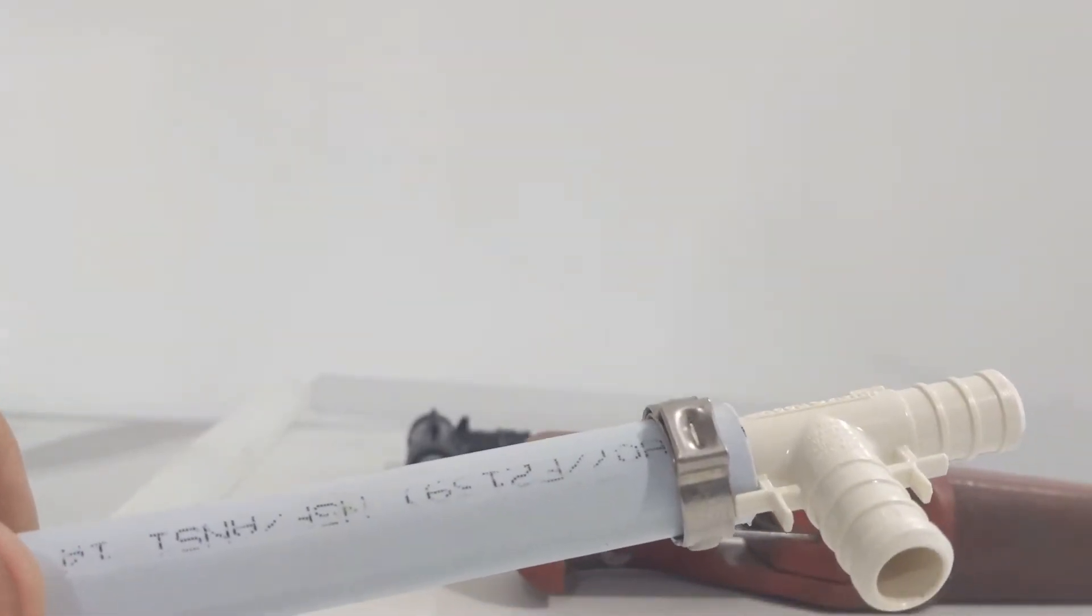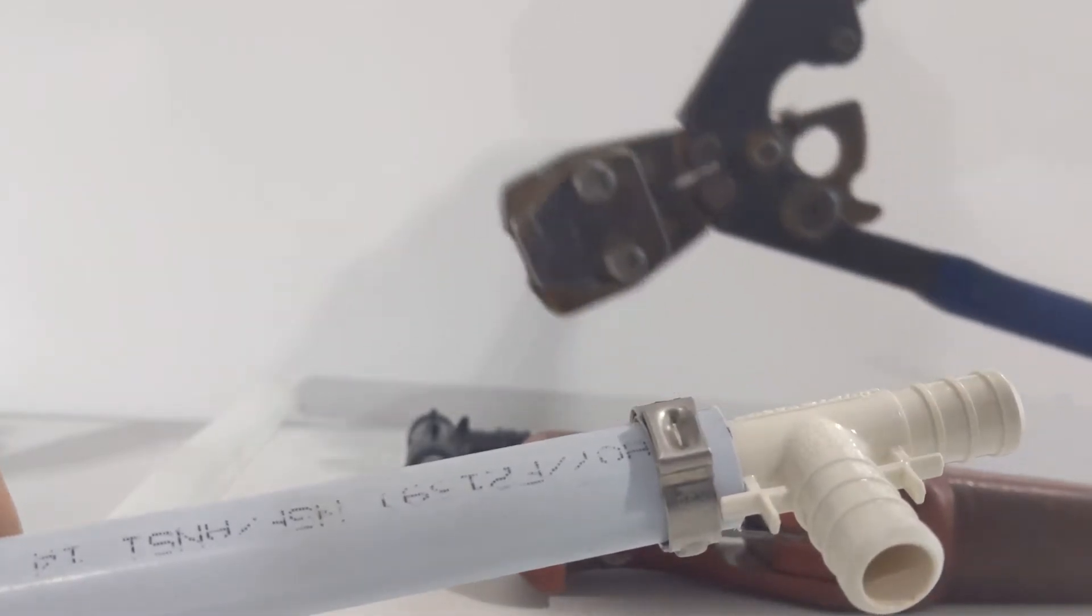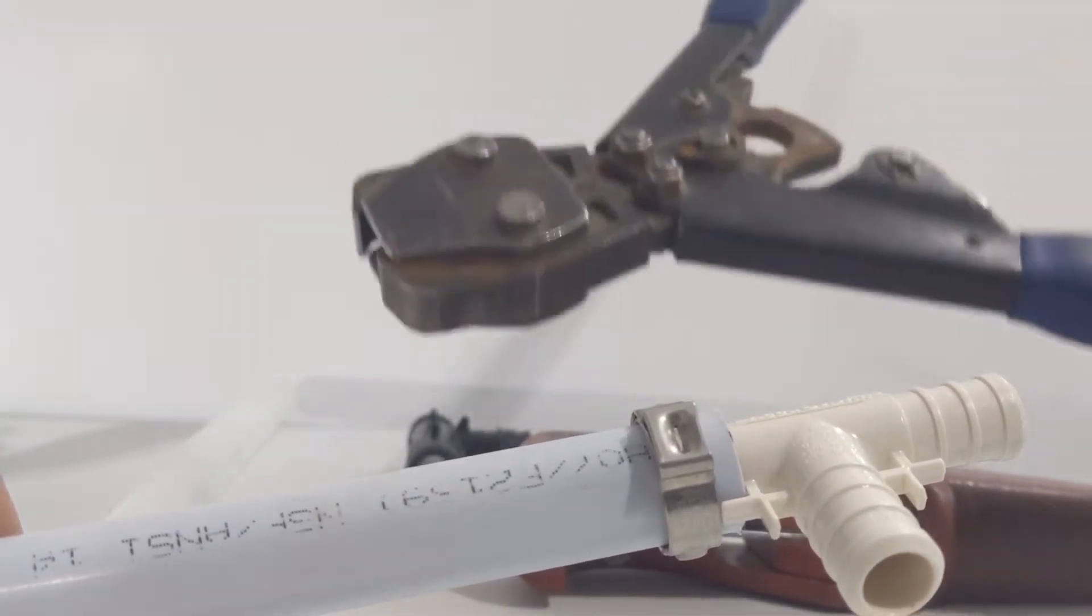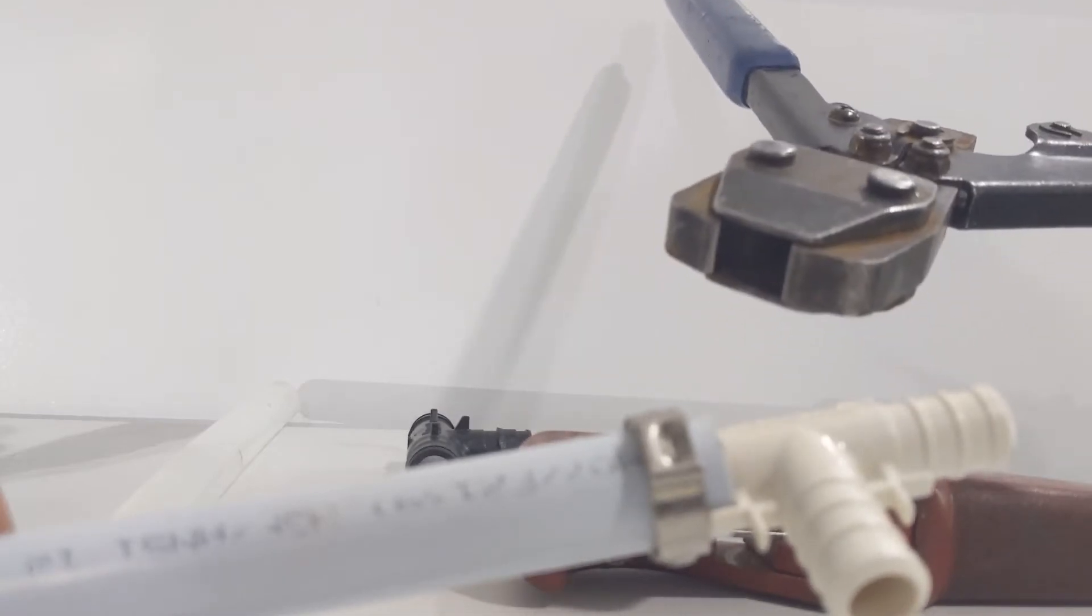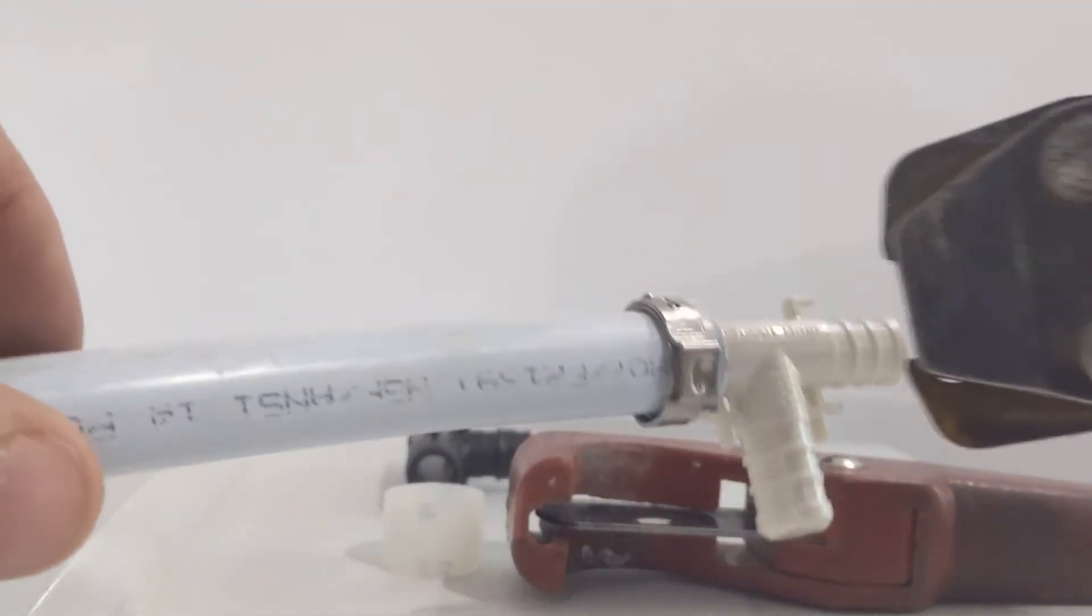Now I should mention there are a couple styles for PEX-B. This one is a crimp style, and you can see the crimper here, and it fits into that slot on the fitting.